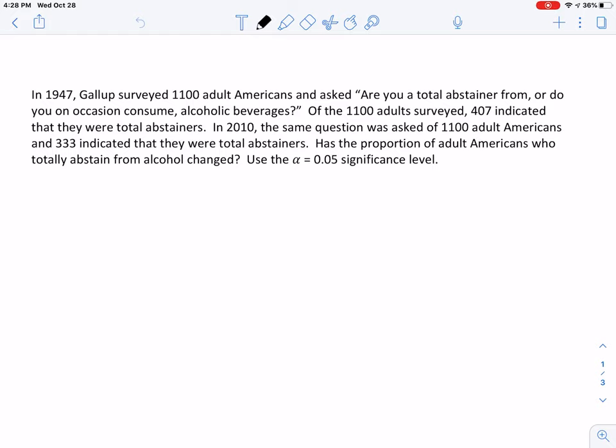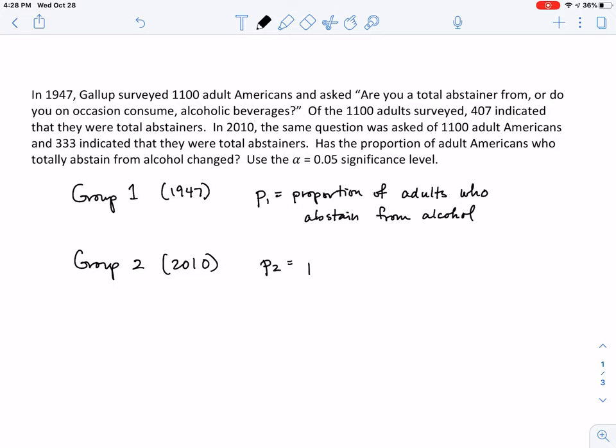So we're dealing with proportions right now. So we have the proportions in 1947. We'll have group one. This is 1947. And we'll let little p1 represent the proportion of adults, adult Americans, who abstain completely from alcohol. And group two, which was in 2010, this is the proportion of all adults in that year who abstain from alcohol.